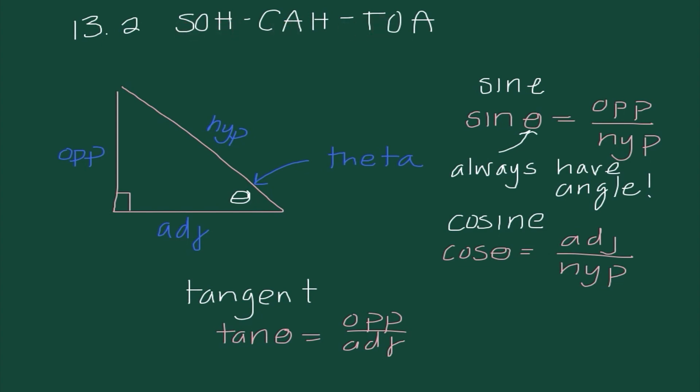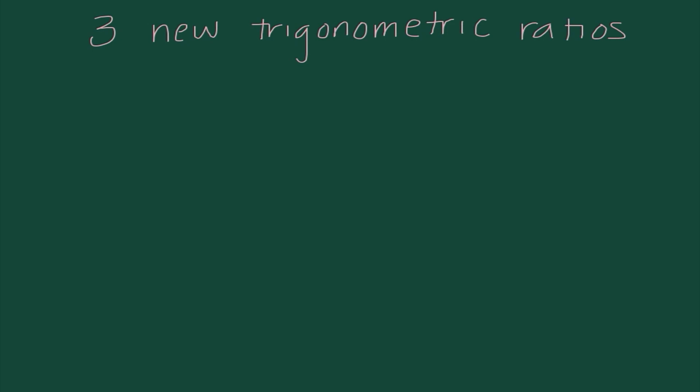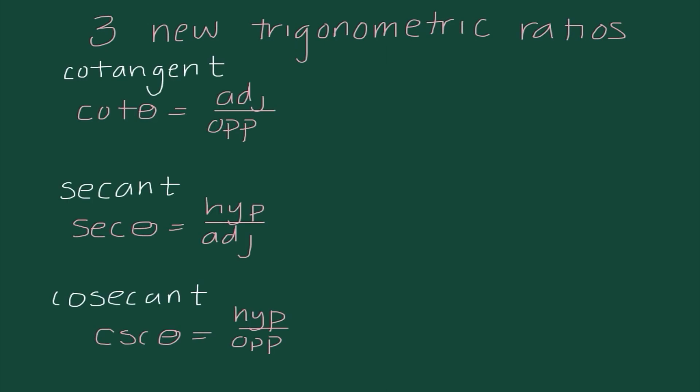I actually recommend that you write SOHCAHTOA on everything that you do, just to keep track and get all these values correct. It's something simple to memorize but something we use quite a bit for the next two chapters. Today we're going to see three brand new trigonometric ratios: cotangent, which is adjacent over opposite; secant, which is hypotenuse over adjacent; and cosecant, which is hypotenuse over opposite.